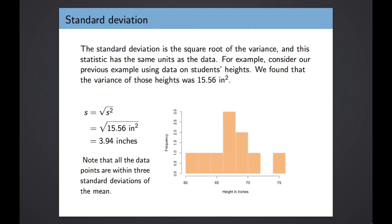One final concept to introduce in this lecture is the standard deviation, which is equal to the square root of the variance. Going back to the height example, we calculated the variance of those 10 heights as 15.56 inches squared. The square root of that — the standard deviation — is 3.94 inches. Notably, the standard deviation is expressed in inches, and the mean of 68 is also expressed in inches. The variance was expressed in inches squared, which meant it didn't make sense to add or subtract variance from our mean. But we can add and subtract standard deviations from our mean because they share the same units. So one standard deviation above the mean is about 72 inches, and one standard deviation below the mean is about 64 inches.